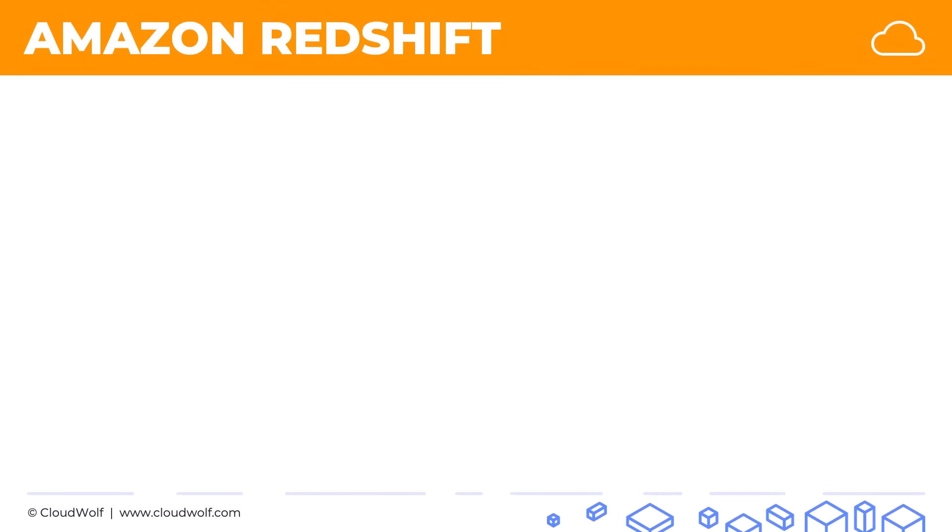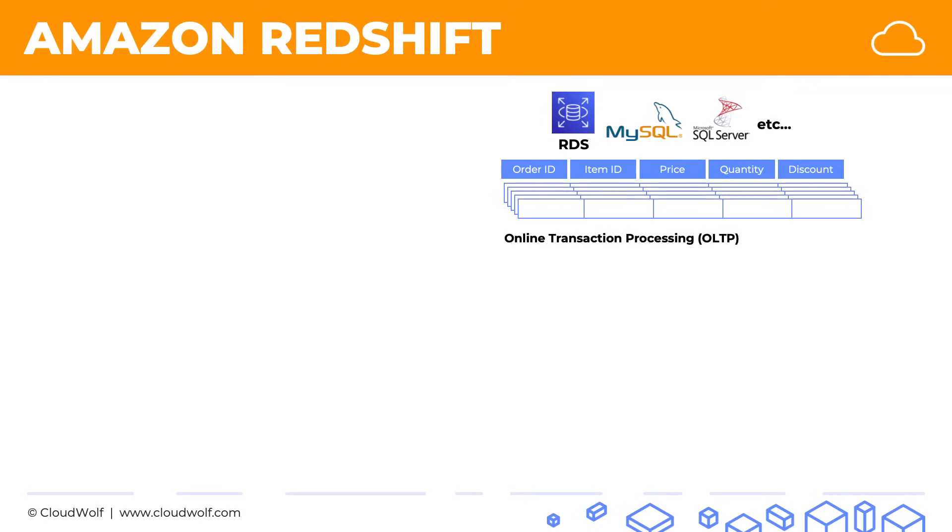Here are our typical data stores in AWS or databases. We've got RDS which supports MySQL, SQL Server, Oracle, PostgreSQL, MariaDB and so on. All those are SQL databases. They're all relational databases and they're all classified as online transaction processing type of storage.